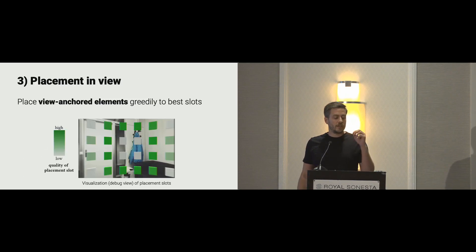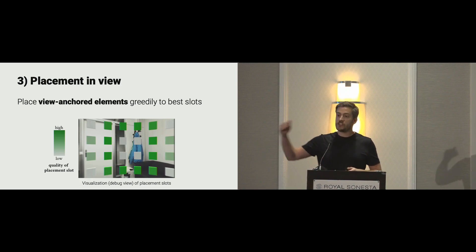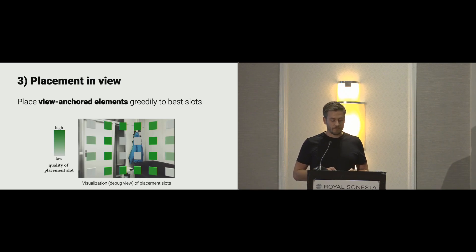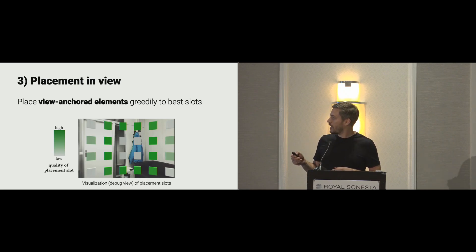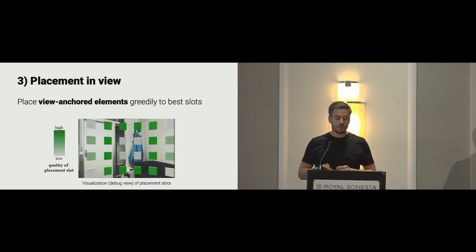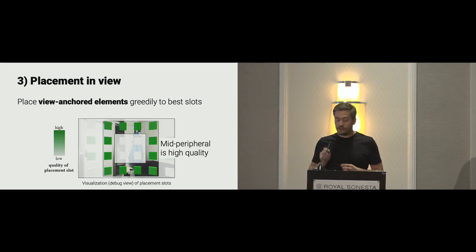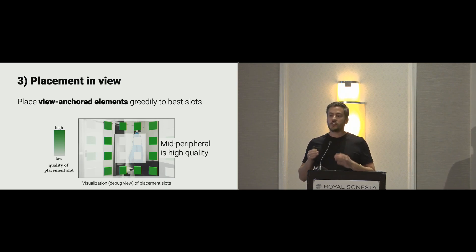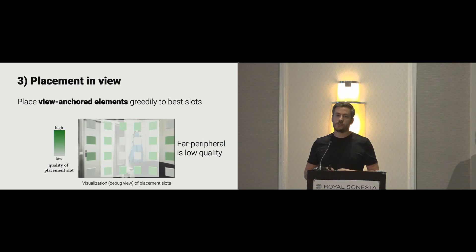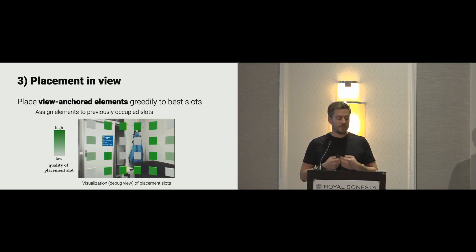The third part is placing view-anchored elements. If an element should be visible and view-anchored, we greedily place it in the best slots. The best slots are a function over the user's field of view: the foveal area is low quality so virtual elements aren't constantly in front of you; the mid-peripheral area is high quality — a good balance of visibility without disturbing the user; and the far-peripheral area is low quality, mostly due to constraints of current headsets. Once we've decided where to place it, if an element was previously assigned, we put it in the same slot again to exploit spatial memory.